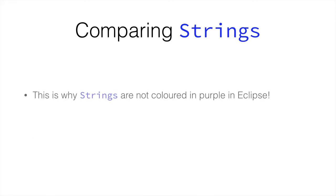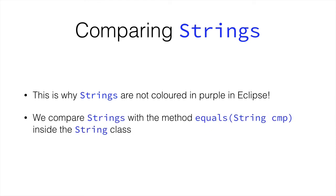So this is why strings are not colored in purple in Eclipse, and this is why we don't compare them with equals equals. We instead compare them with a method that is inside the string class. And this method is equals. And this method takes the string with which we are comparing the other string.